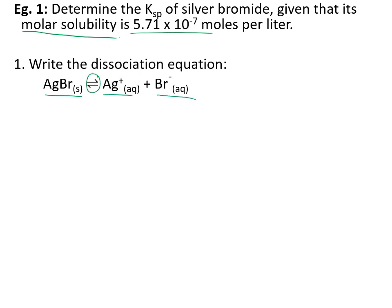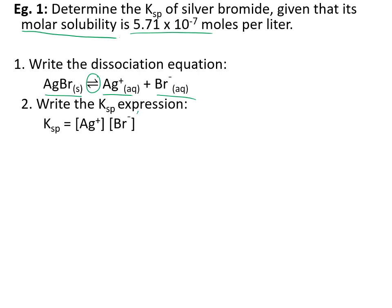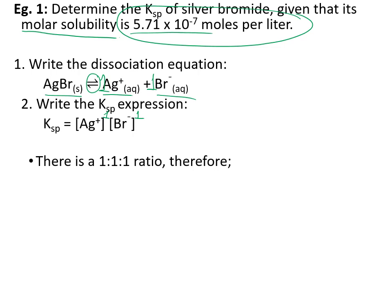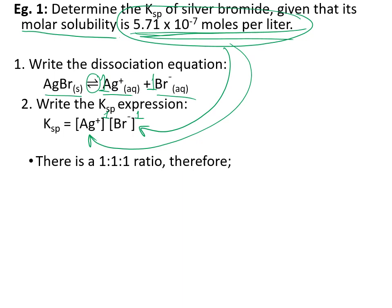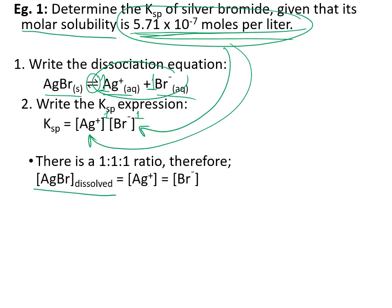Silver bromide forms one silver ion and one bromide ion — a 1:1:1 ratio. We write the Ksp expression; the exponents are ones for both silver and bromide, reflecting coefficients of one in the dissociation equation. When we say 5.71 × 10⁻⁷ mol/L have dissolved, that is the amount of ions put into solution. Because it's a 1:1 ratio, it is also the concentration of bromide ions in solution. The molar solubility gives you the concentration of the ions, as long as you factor in the molar ratio. The amount of silver bromide that dissolved — not its concentration as a solid — is 5.71 × 10⁻⁷.